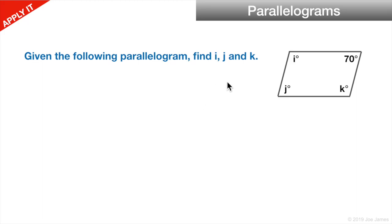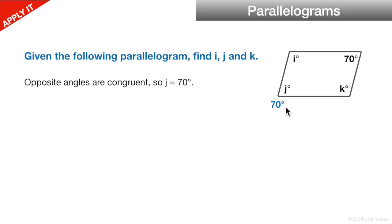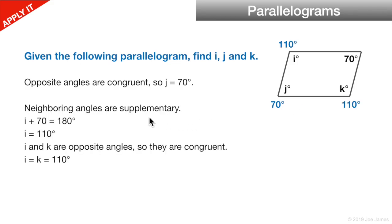Let's do a practice problem. Given the following parallelogram, find I, J, and K. One angle is 70 degrees. The opposite angle J is also 70 degrees, because opposite angles in a parallelogram are congruent. Neighboring angles are supplementary, so I plus 70 equals 180, giving us I equals 110. Since opposite angles are congruent, I and K are both 110 degrees.